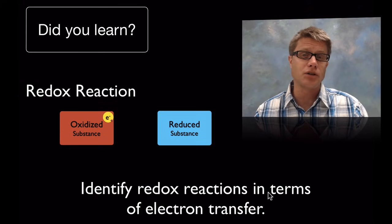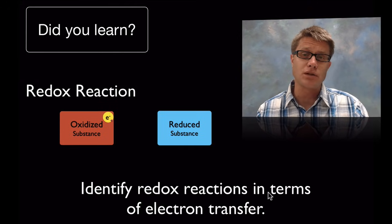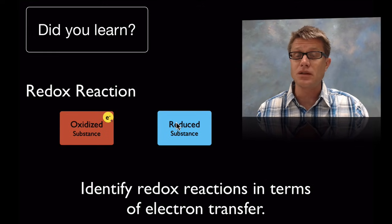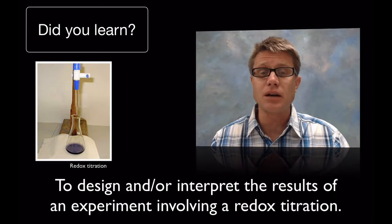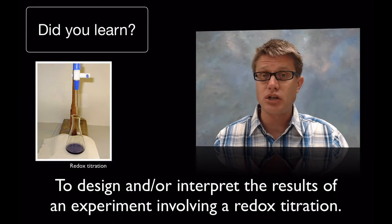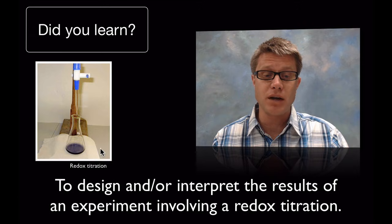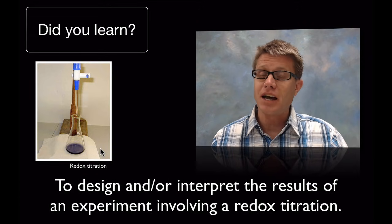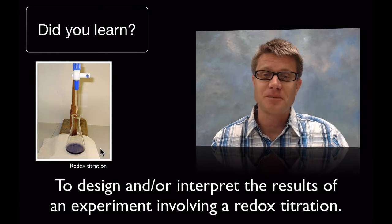Could you identify what's the oxidized substance and what's the reduced substance? Remember the oxidized substance is the one that's losing the electrons, and the reduced substance is gaining them. A great application example is the Winkler titration method for determining the amount of dissolved oxygen. That's redox reactions, and I hope that was helpful.